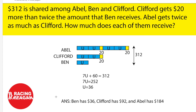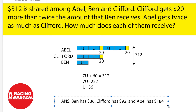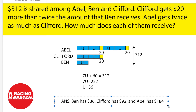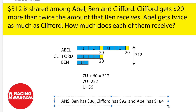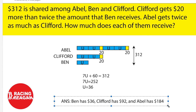So now you know how much Ben will have, which is $36. In order to find Clifford, it will be 36 times 2 plus 20, which equals $92. And Abel would equal 92 times 2, which equals $184. So this is how you do the question.